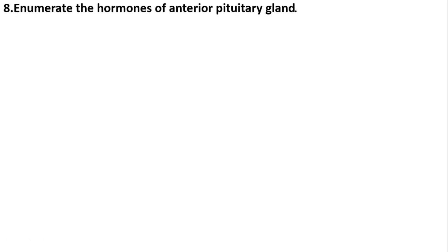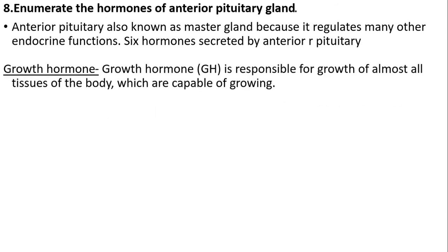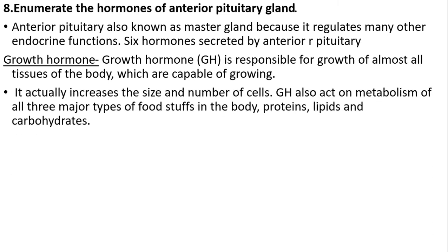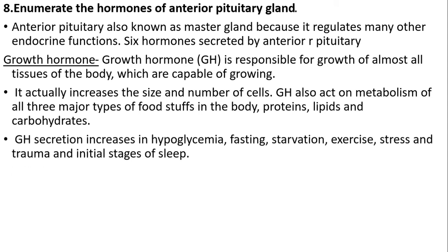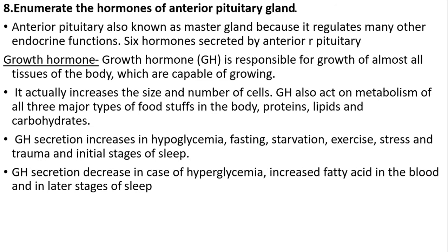Enumerate the hormones of the anterior pituitary gland. The anterior pituitary gland is also known as the master gland because it regulates many other endocrine functions. Six hormones are secreted by the anterior pituitary. Growth hormone (GH) is responsible for the growth of almost all tissues in the body capable of growing; it increases the size and number of cells. GH also acts on the metabolism of the three major types of nutrients — protein, lipids, and carbohydrates. GH secretion increases in hypoglycemia, fasting, starvation, exercise, stress, trauma, and in the initial phase of sleep. GH secretion decreases in hyperglycemia, increased fatty acids in the blood, and in the later stage of sleep.